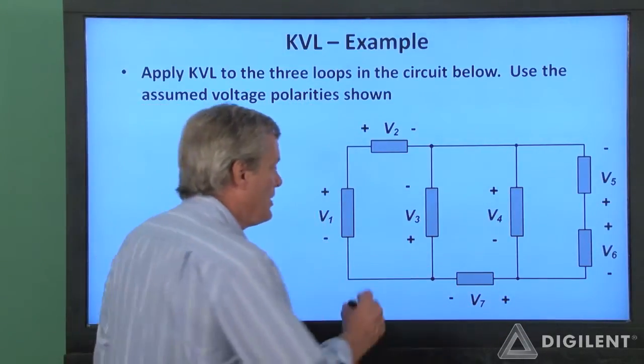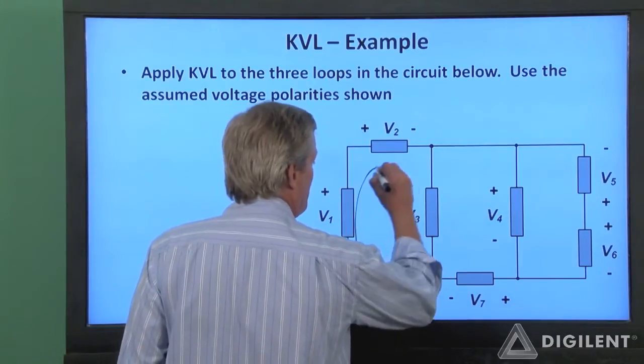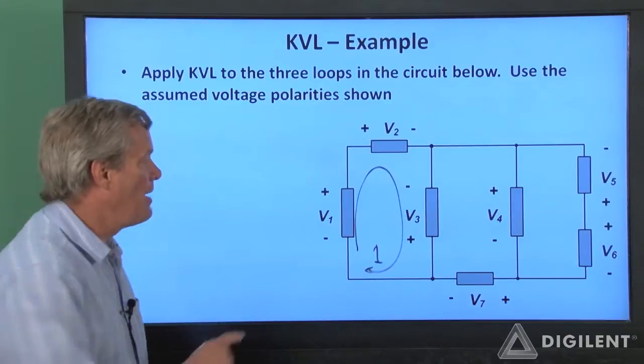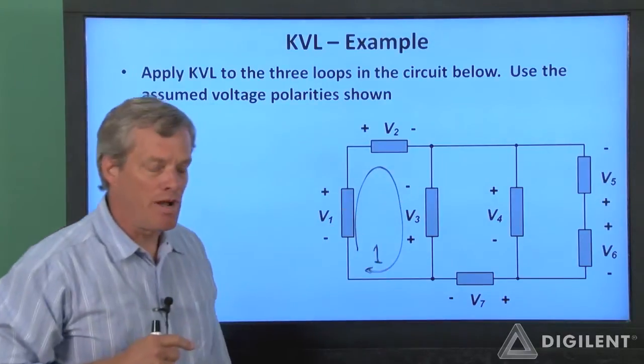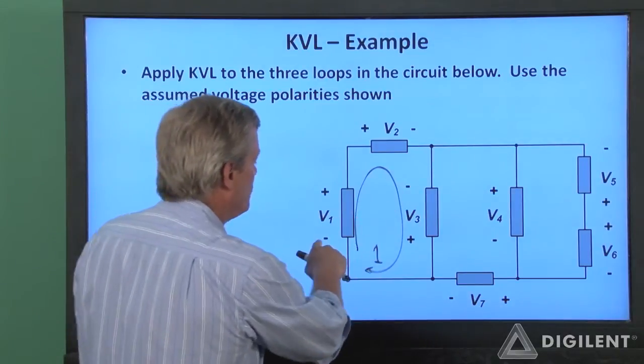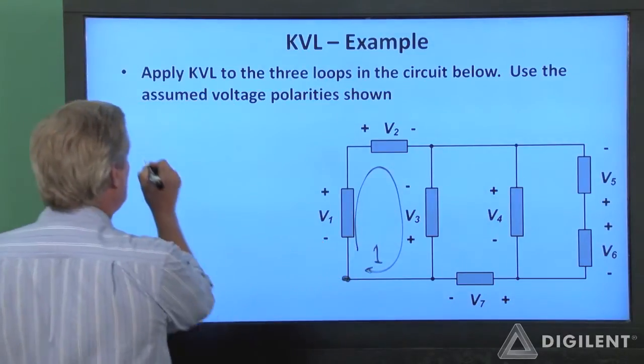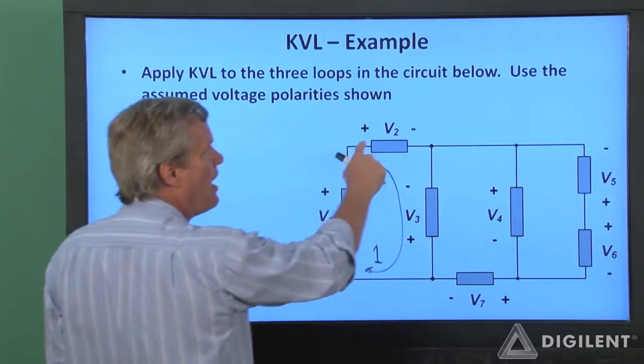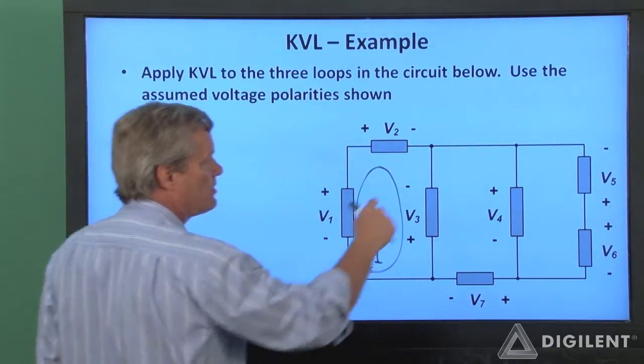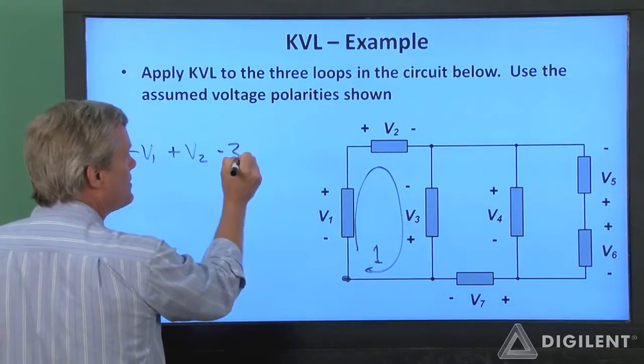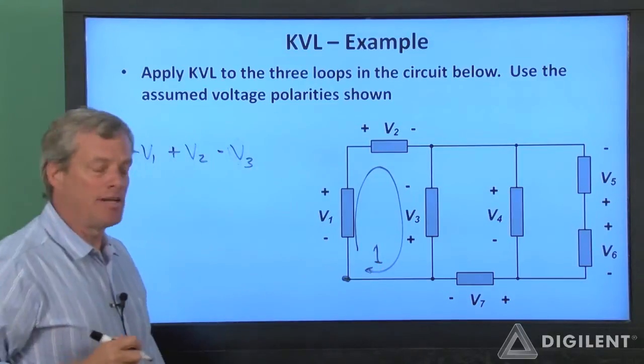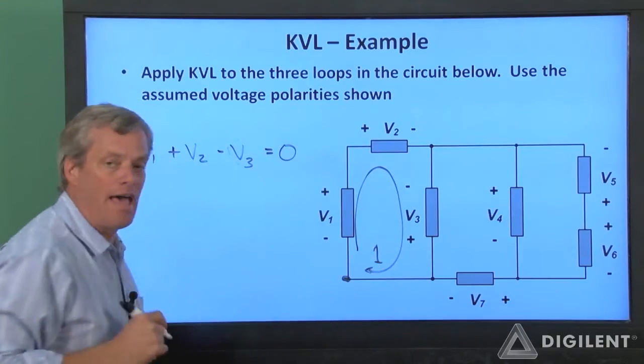Let's pick a loop and write KVL around it. I'll choose this as loop 1. I'm going to follow this loop in this direction, picking an arbitrary starting point, say down here, and following the loop. I see a negative sign on V1 first, so I'm going to get negative V1. I'll see a positive sign on V2 first, so that's positive V2, and I see a negative sign on V3 first, so minus V3. That brings me back to my starting point, so that equals zero.